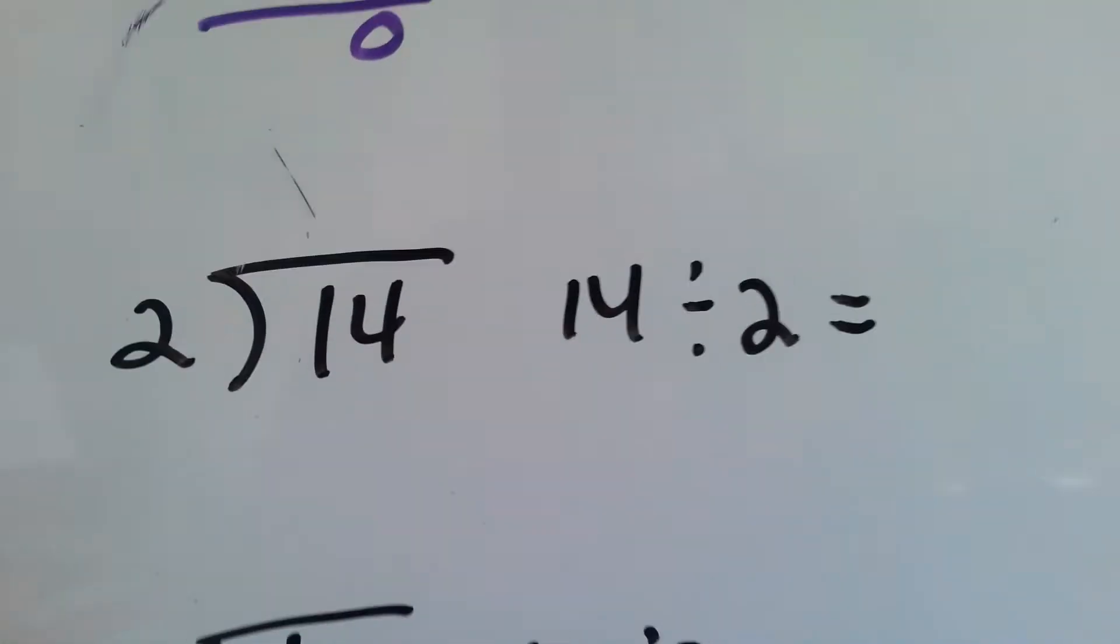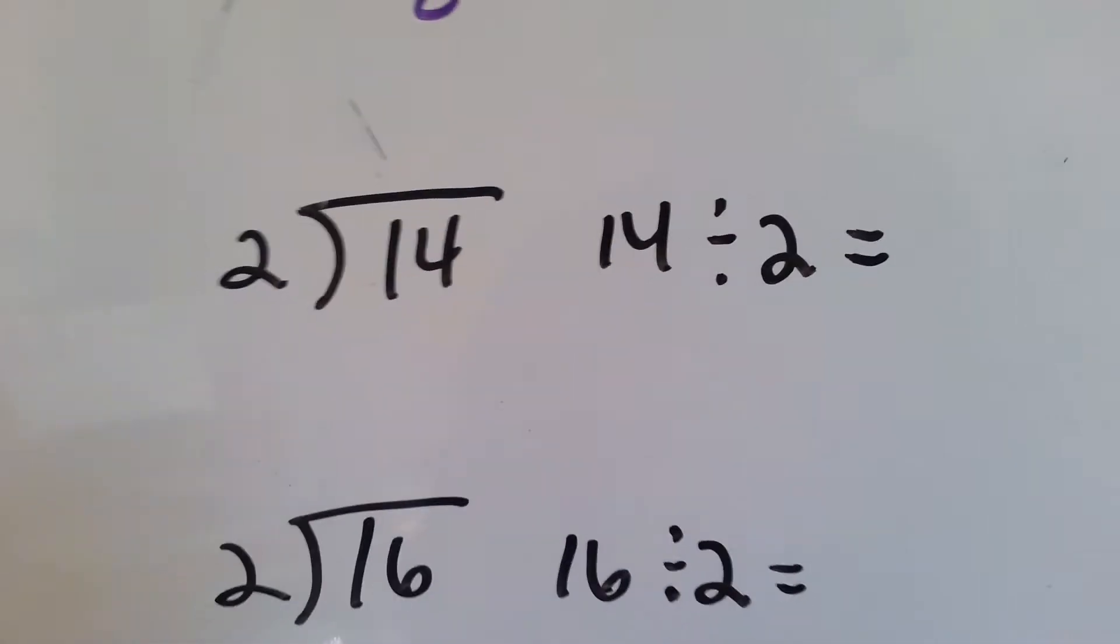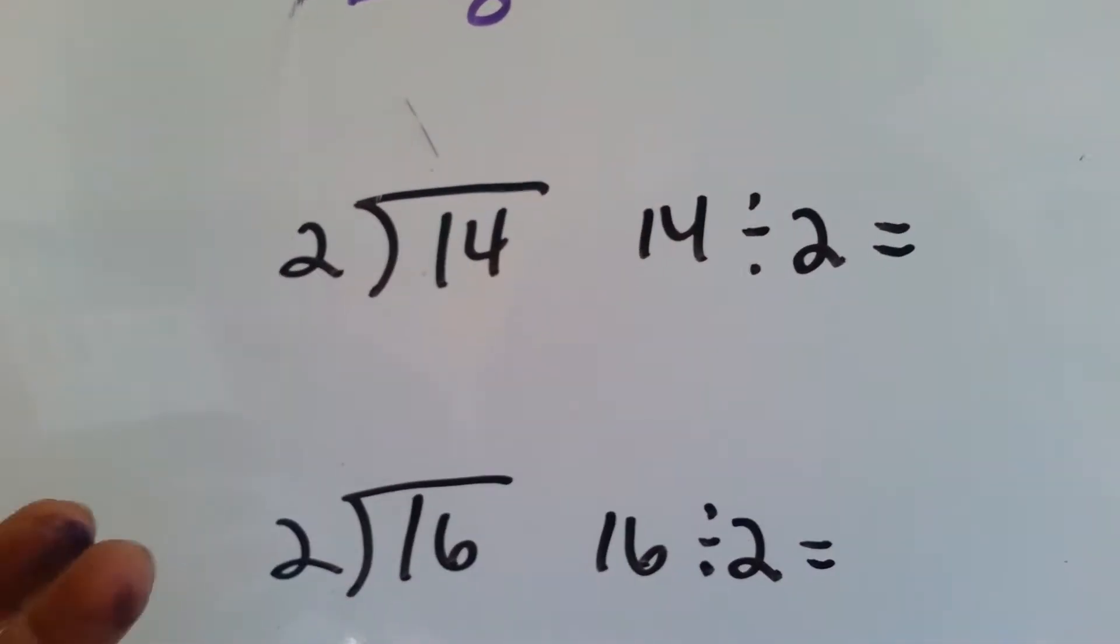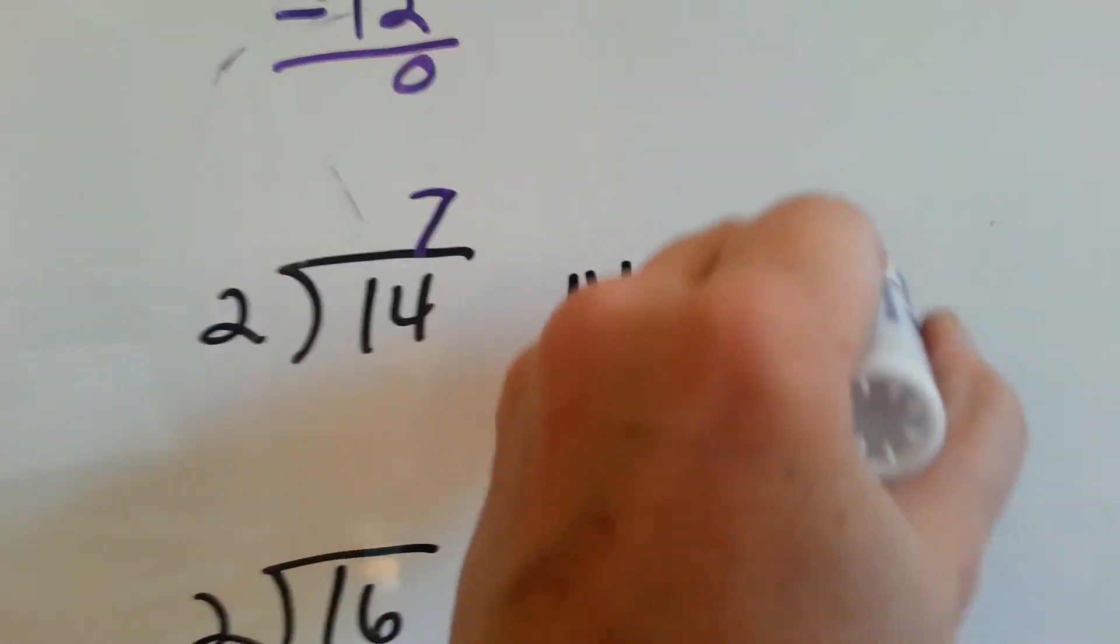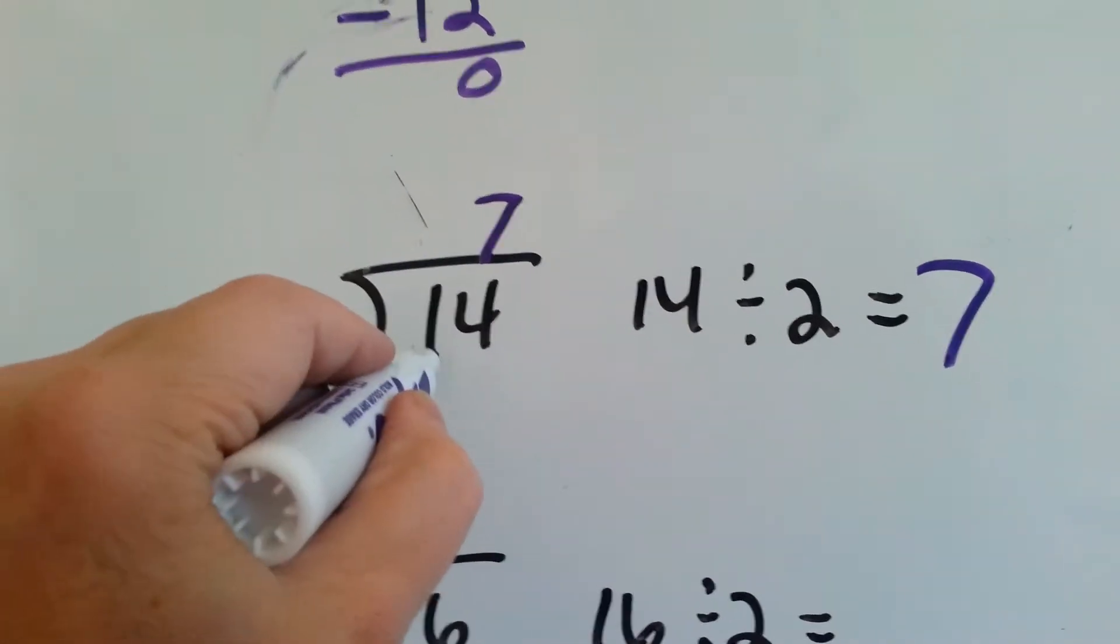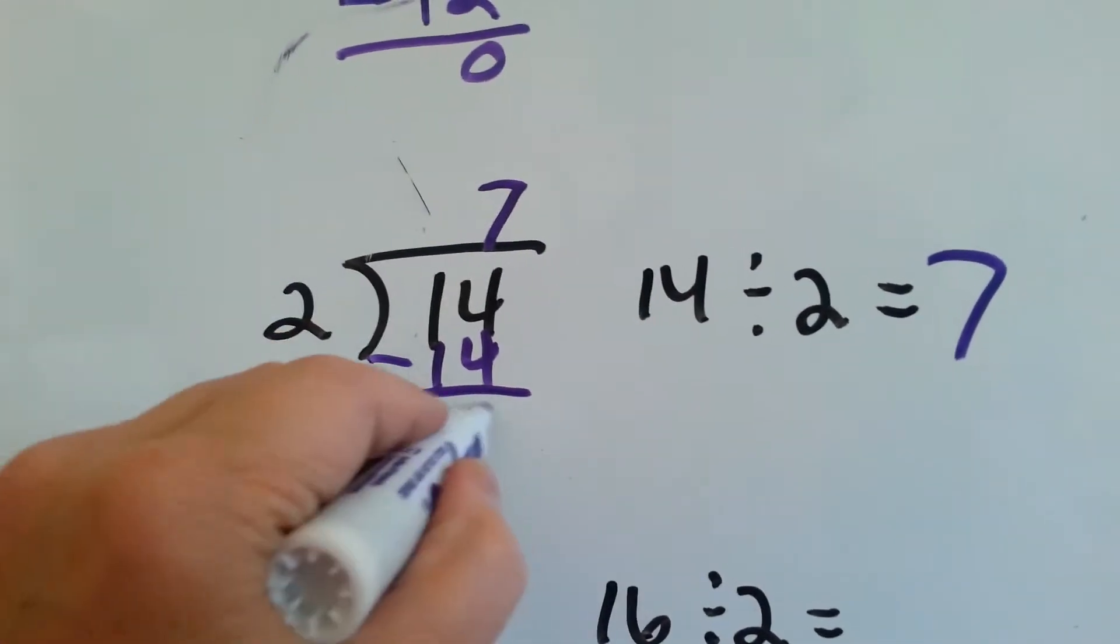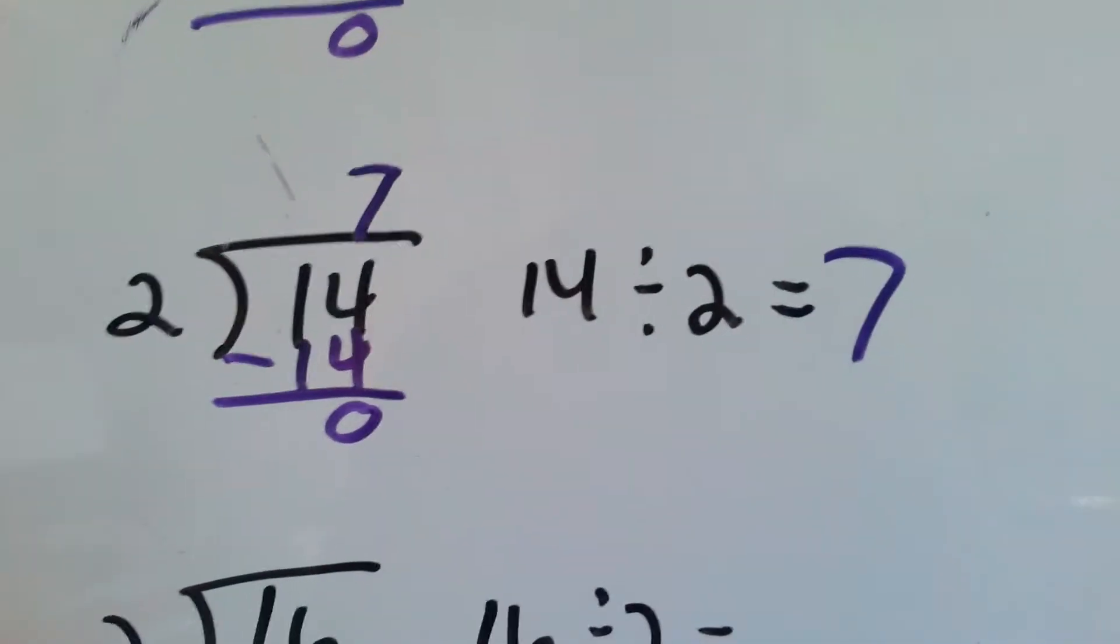2 goes into 14 how many times? Let's count by 2's. 2, 4, 6, 8, 10, 12, 14. That was a 7. 2 times 7 is 14. We do our subtraction and we've got a 0 remainder.